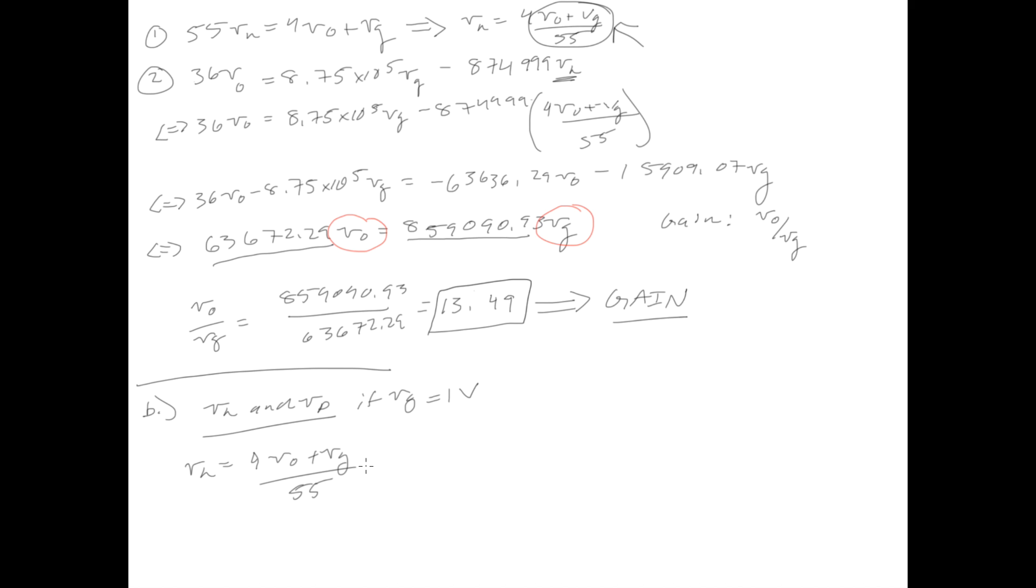So that would just be 4 times V0. Well, what's V0? From this gain equation, V0 divided by 1 now, because Vg is 1, is equal to 13.49. So 4 times 13.49 plus Vg, which is 1, over 55. And if you were to do this, you would just find that 4 times 13.49 plus 1 over 55 is just 0.9992727.